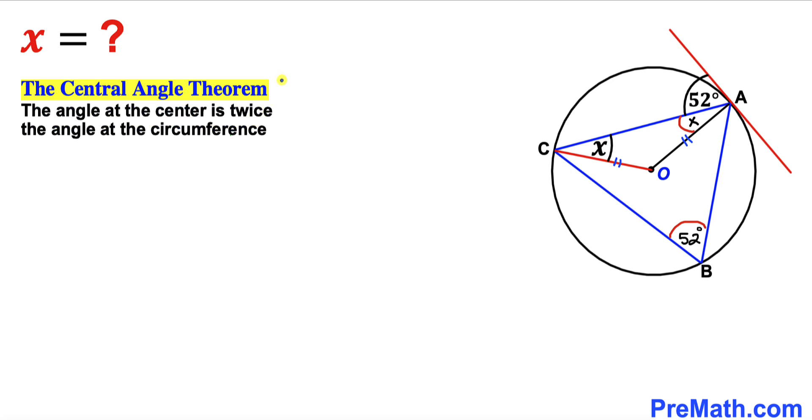And now let's recall the Central Angle Theorem. According to this theorem, the angle at the center is twice the angle at the circumference. And we can see that this is our angle at the circumference.